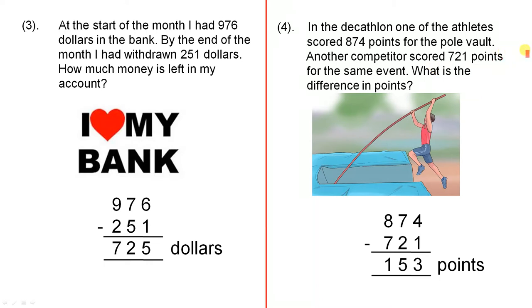In the decathlon one of the athletes scored 874 points for the pole vault. Another competitor scored 721 points for the same event. What is the difference in points? Remember difference means subtraction. 874 minus 721.